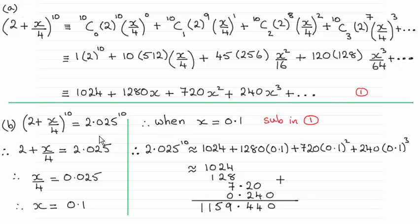Now, for part B then, we had to work out an approximate value to 2.025 to the power 10 from this expansion. And as you can see, they're both to the power 10, so it must mean that inside the bracket here, 2 plus x over 4, must have been equal to 2.025.